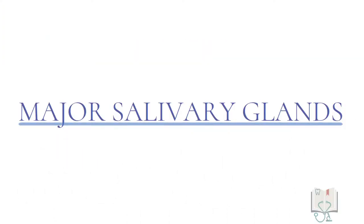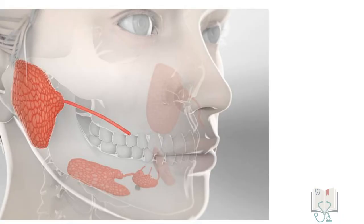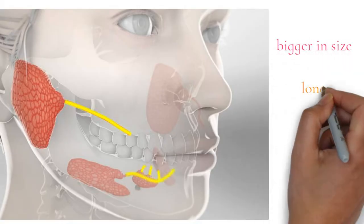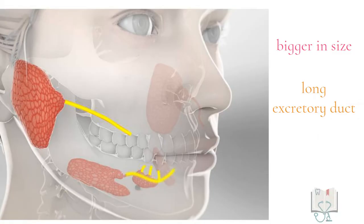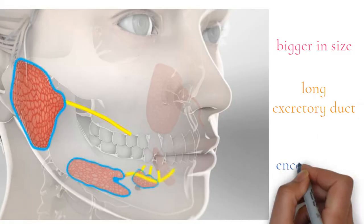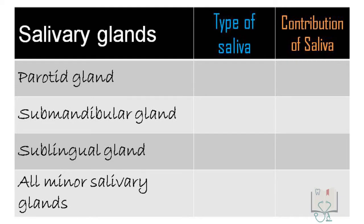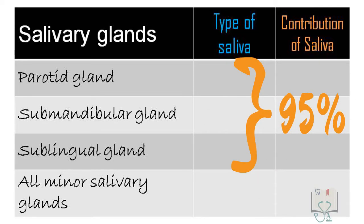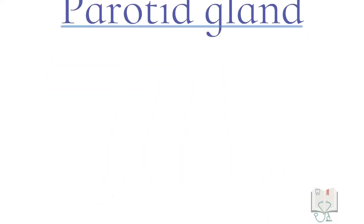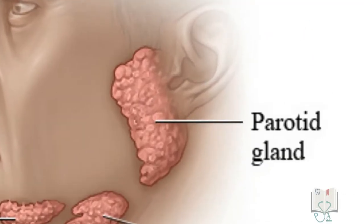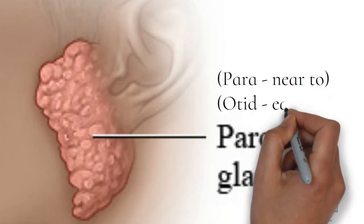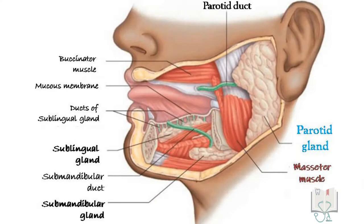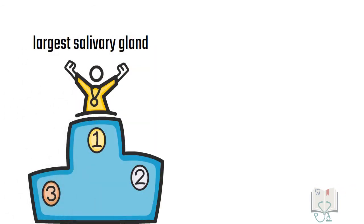The major salivary glands are comparatively bigger in size and their saliva reaches the oral cavity through long excretory ducts. They are covered by a fibrous capsule and contribute about 95% of the total saliva. The parotid gland, as the name suggests, is located anterior to the external ear. It is superficial to the ramus and the masseter muscle and is the largest major salivary gland.